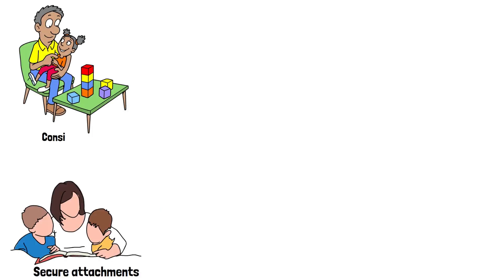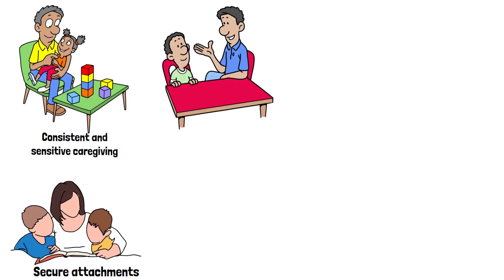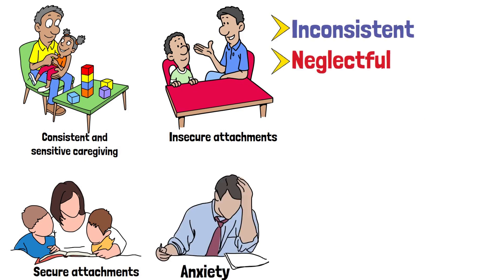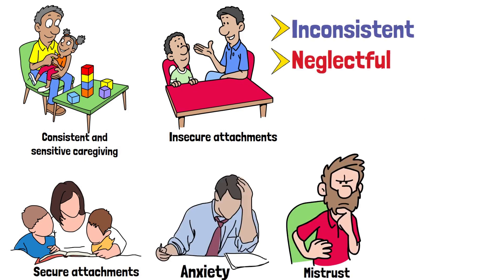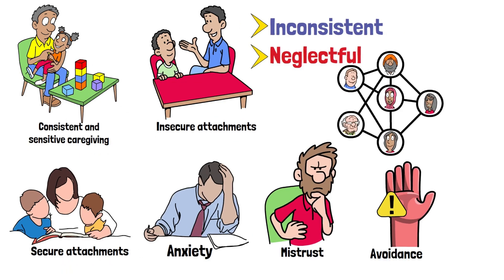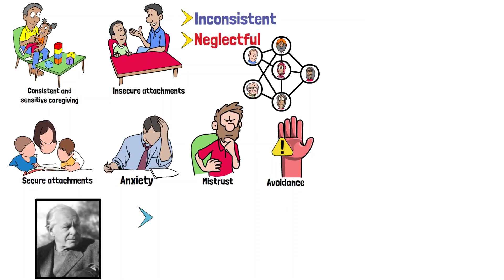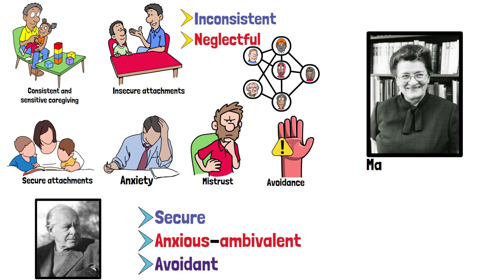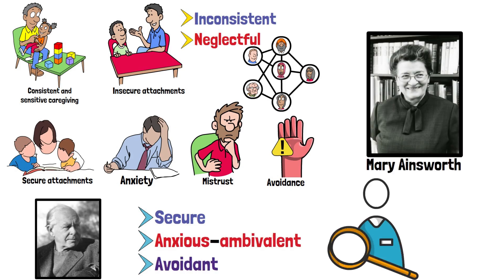Secure attachments, formed through consistent and sensitive caregiving, result in positive working models. Conversely, insecure attachments emerge when caregivers are inconsistent or neglectful, leading to anxiety, mistrust, or avoidance in relationships. Bowlby outlined three primary attachment styles — secure, anxious-ambivalent, and avoidant — later expanded by Mary Ainsworth's research.